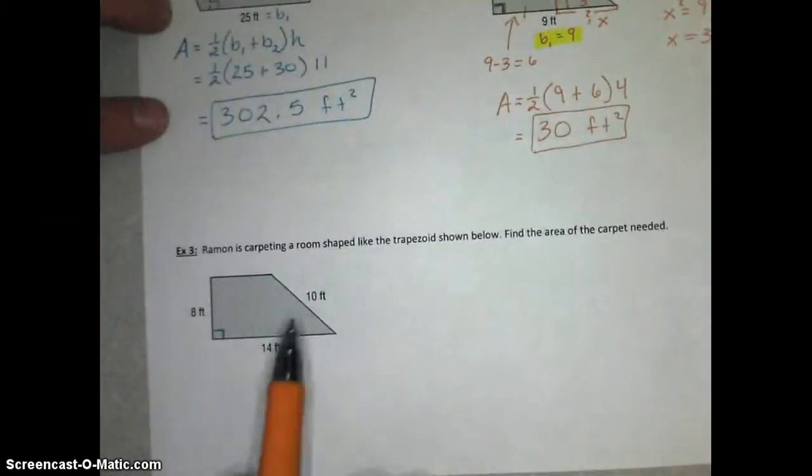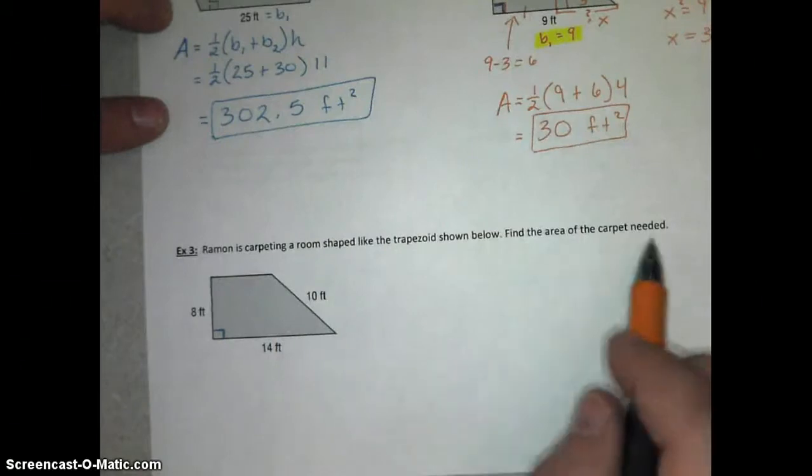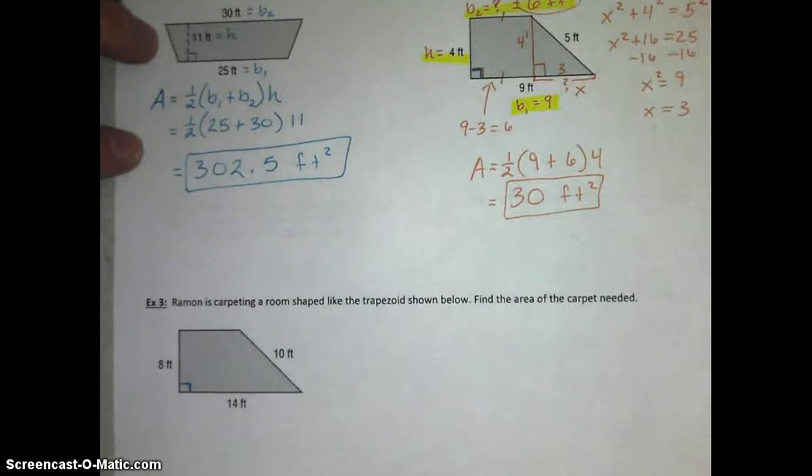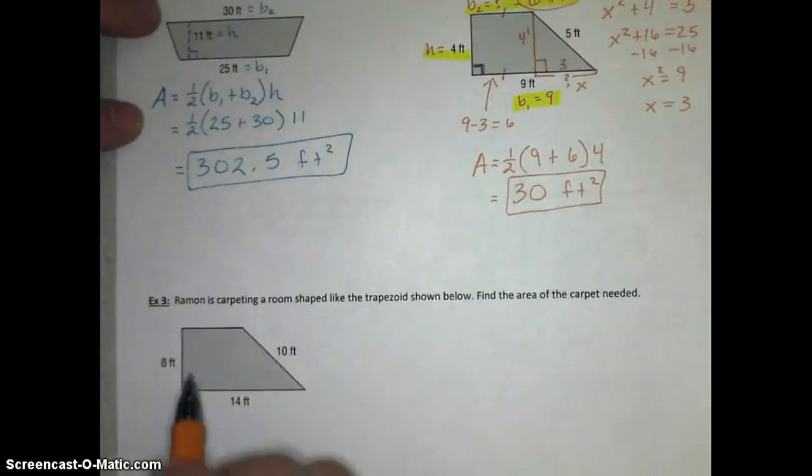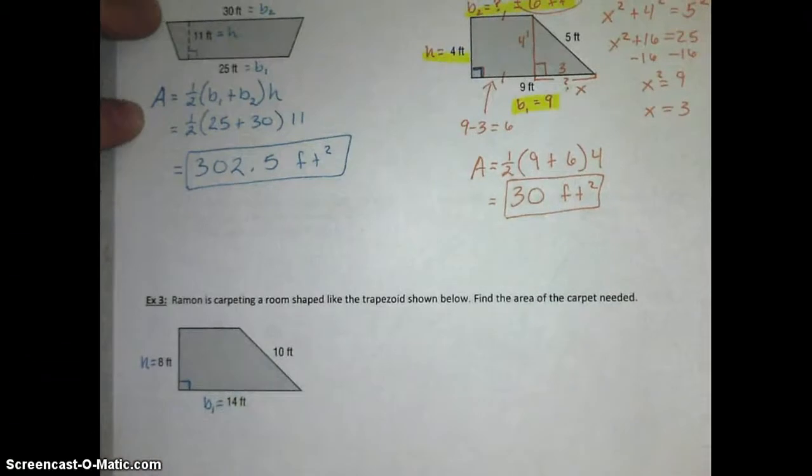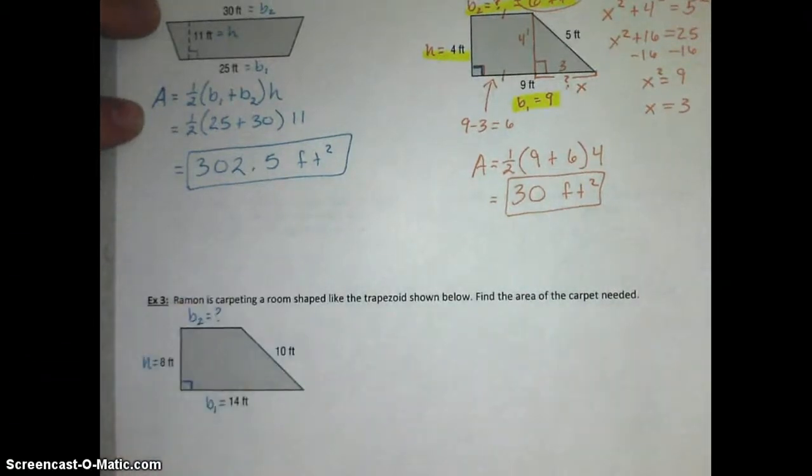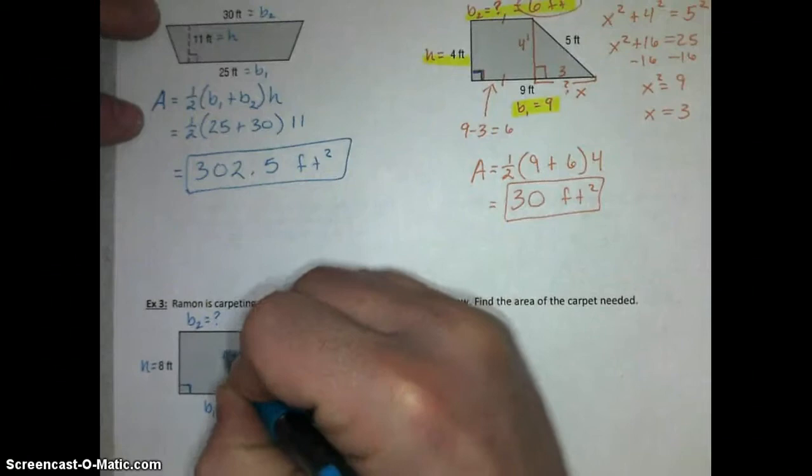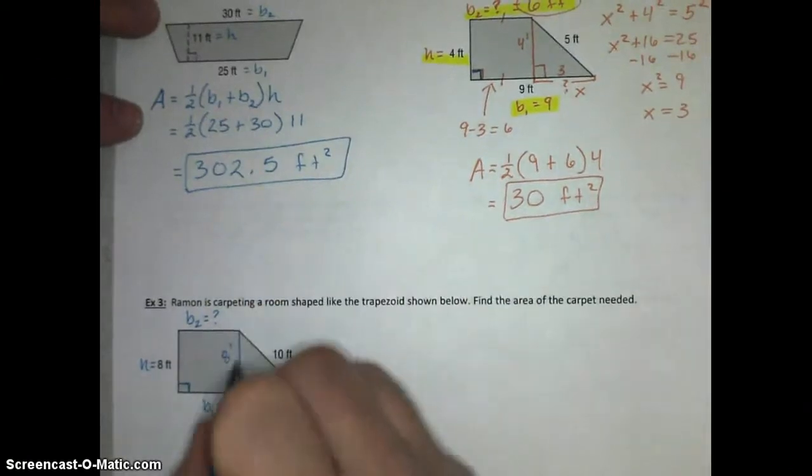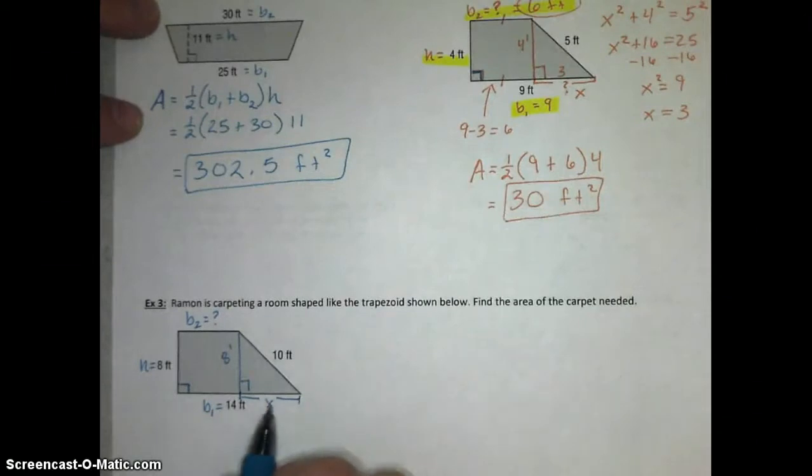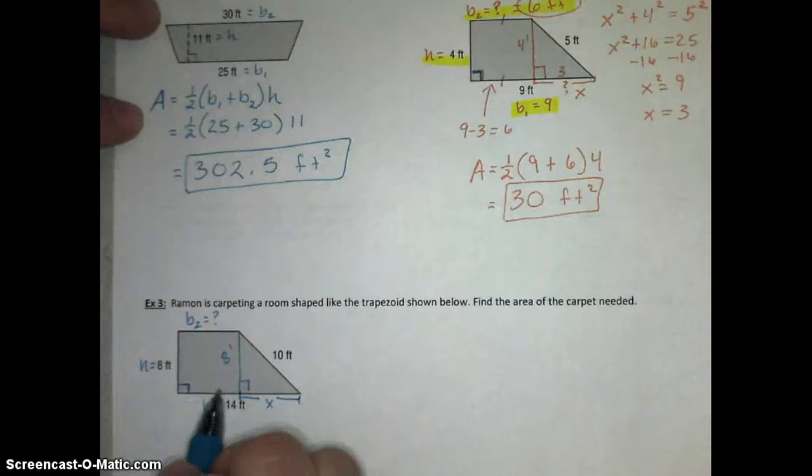The next problem, Ramon is carpeting a room shaped like the trapezoid shown below. Find the area of the carpet needed. This is very similar to what we just did. I'm going to help you set this up, but then give you time to pause the video and try and find this calculation on your own. Once again, we have a trapezoid. We know the height is 8 feet, base 1 is 14 feet. We need to know base 2 to be able to move on. If you remember what we just did, I can make this vertical line, which is also 8 feet, and that creates a right triangle where I can find this unknown piece.